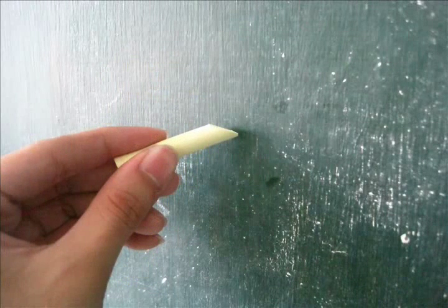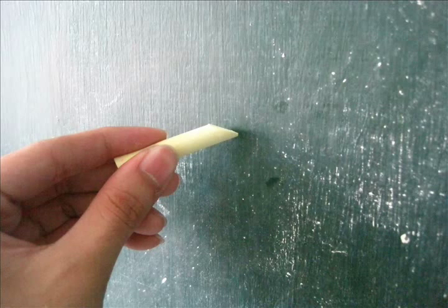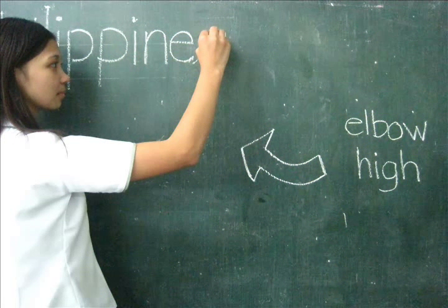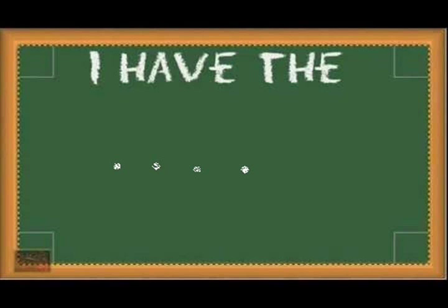Here are some more chalkboard techniques from James W. Brown. First: Sharpen your chalk to get good line quality. Second: Stand with your elbow high and move along as you write.